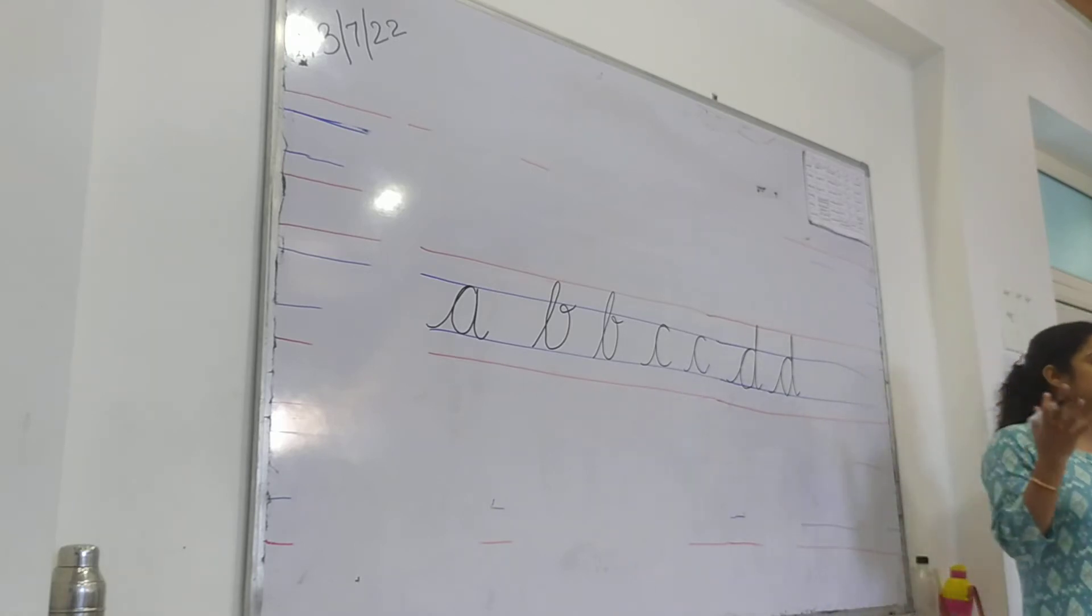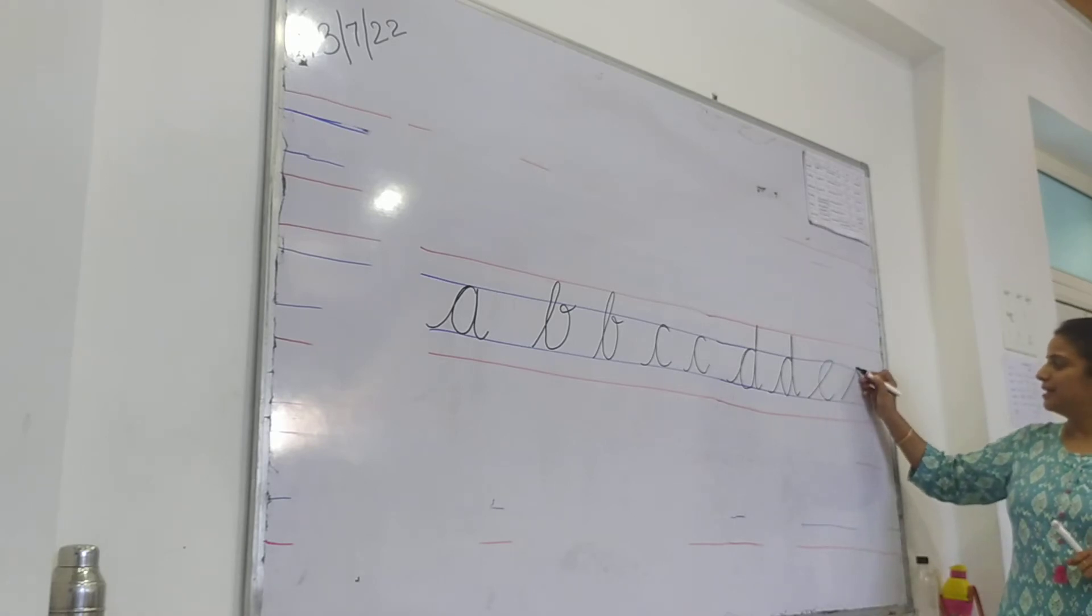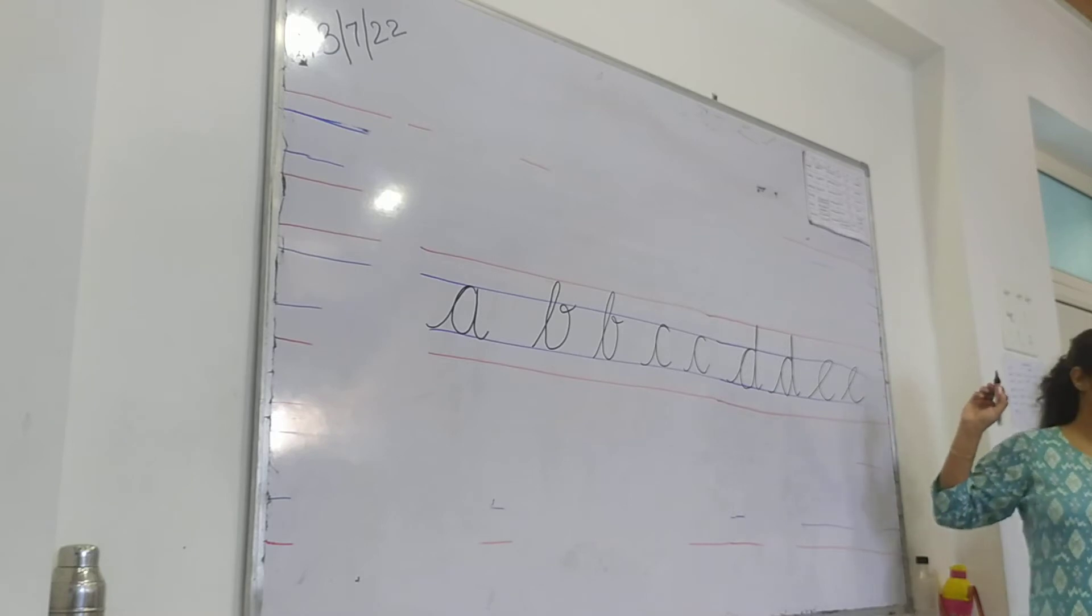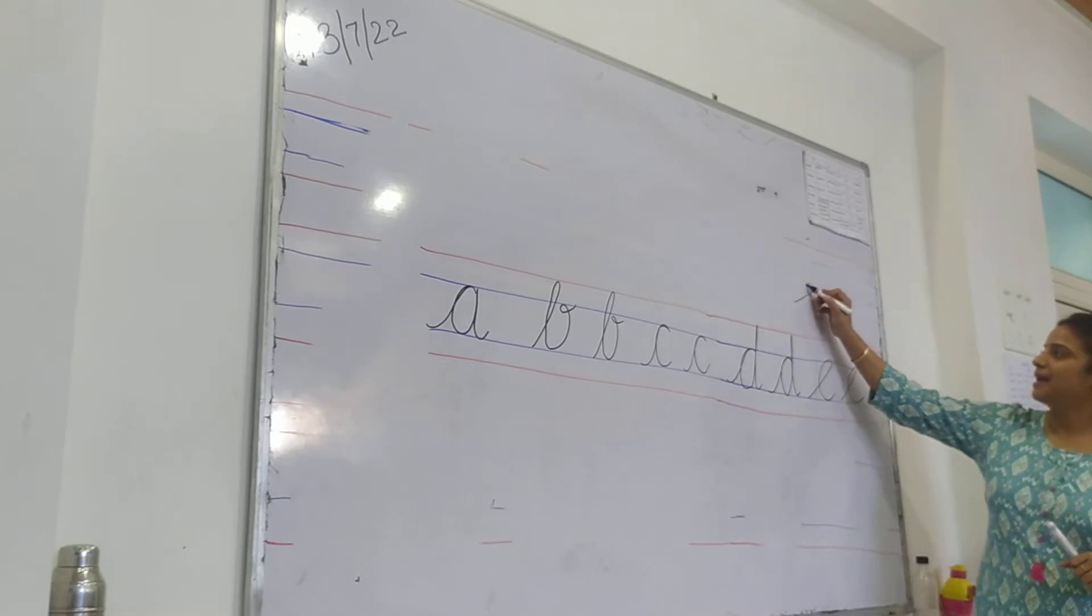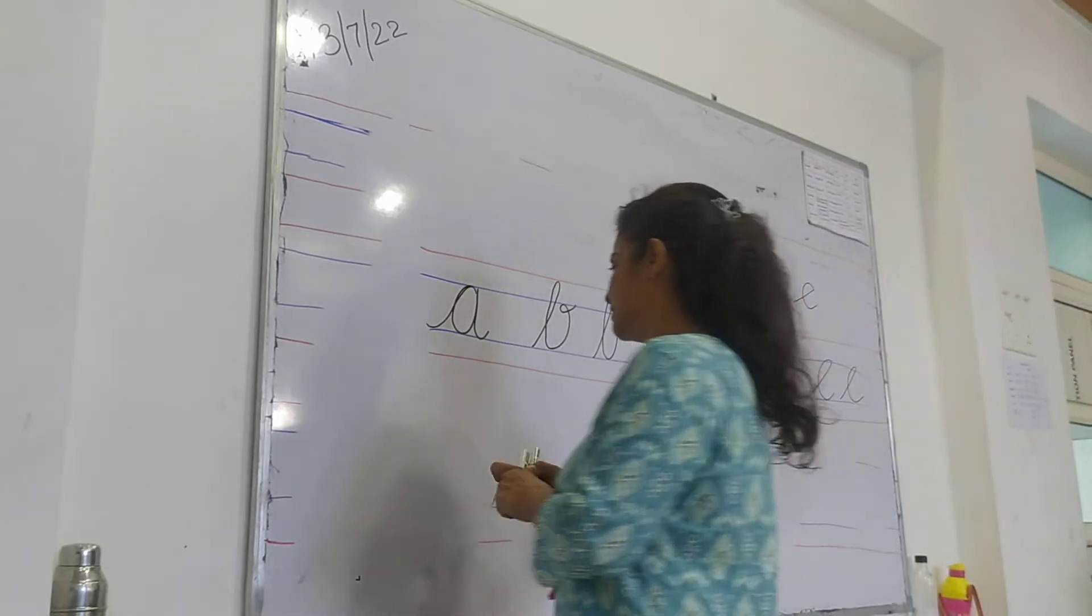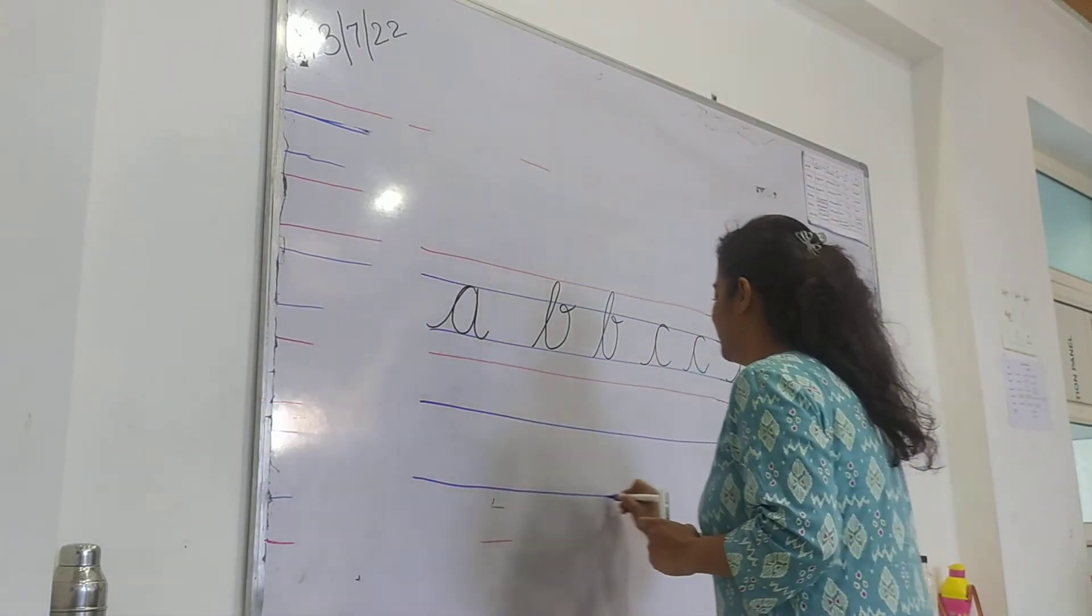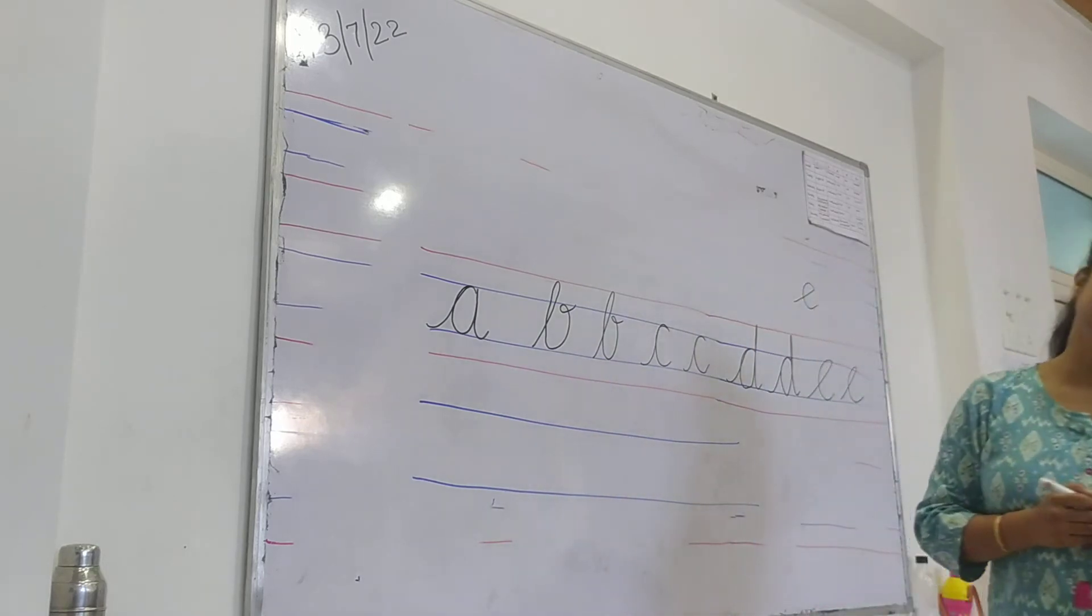Now the letter E. E can be the formation. Okay. Slanting line and turn. Slanting line and turn. Slanting line and turn. Turn.